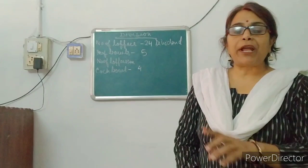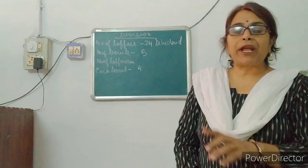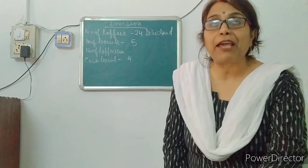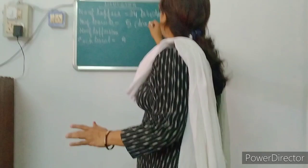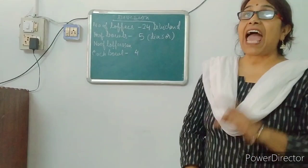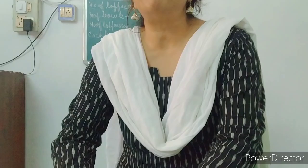And how many bowls are there? 5 bowls are there. That means 5 bowls refers to the divisor. The divisor means the number by which we divide the dividend. And in each bowl, how many chocolates are there? In each bowl, 4 chocolates are there.